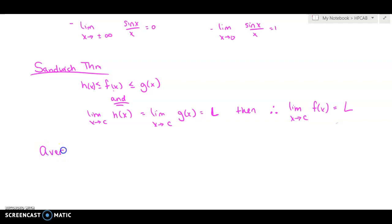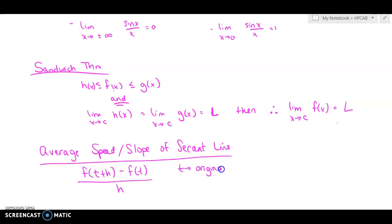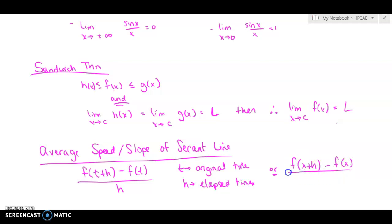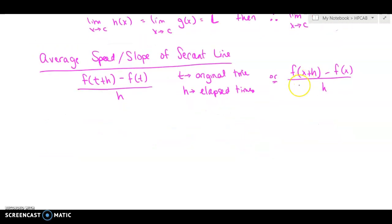We talked about average speed slash the slope of a secant line. This one does not involve a limit — it's just f(T+H) minus f(T) all over H. T is the original time and H is the elapsed time. It could also be f(x+H) minus f(x) all over H, depending on whether we're talking about time or slope.